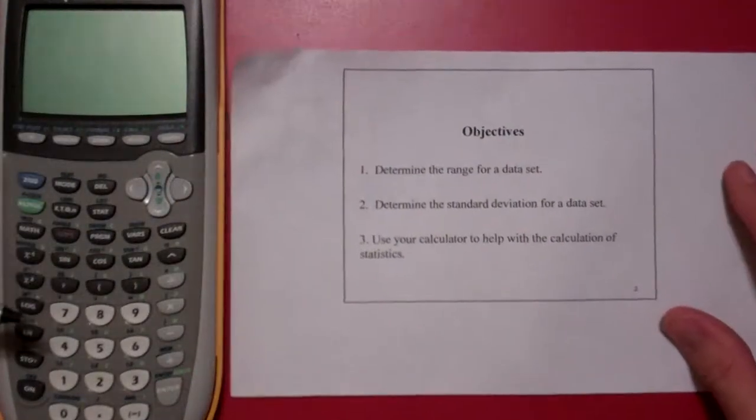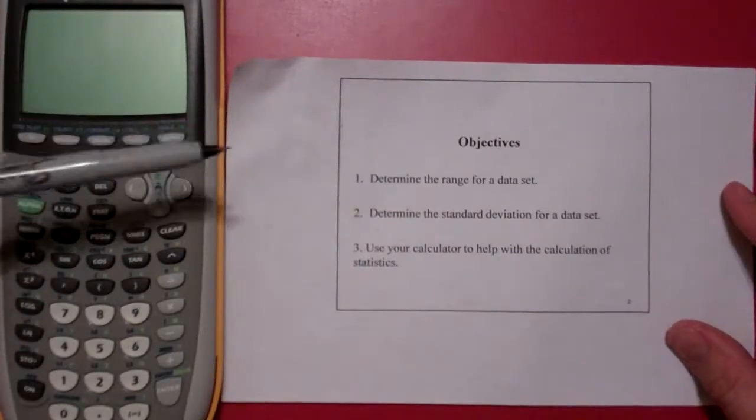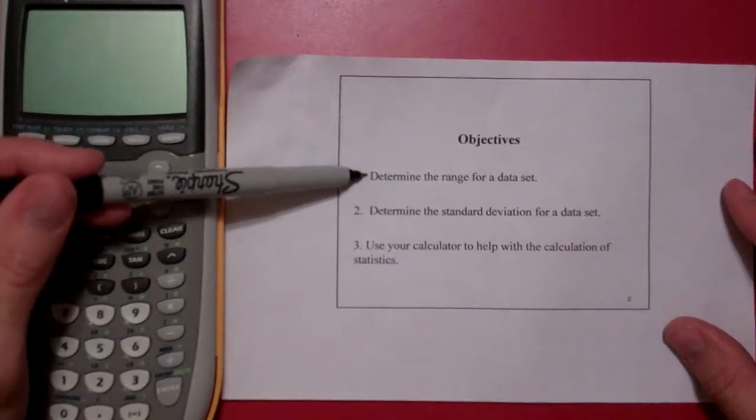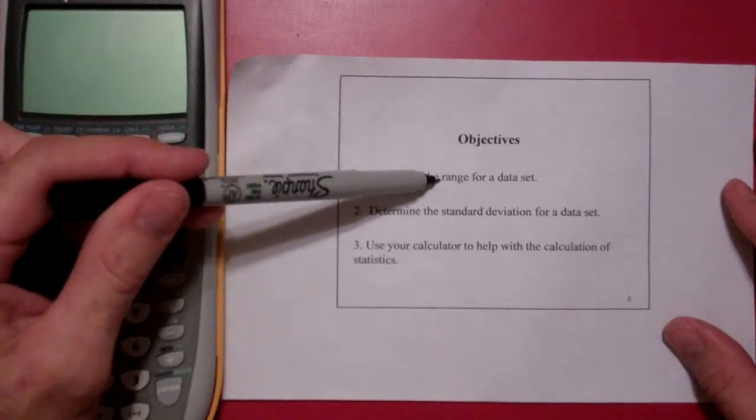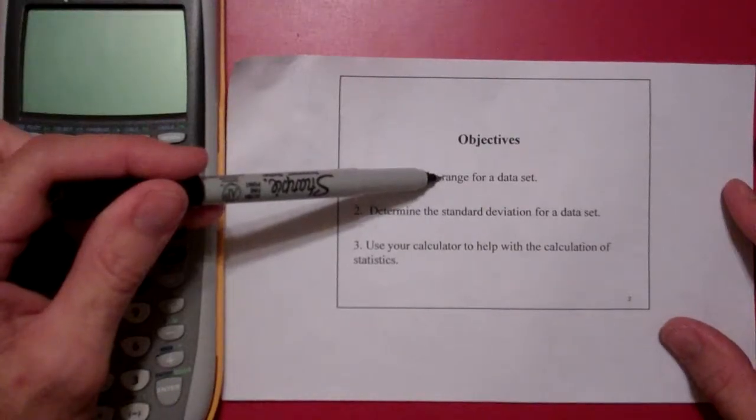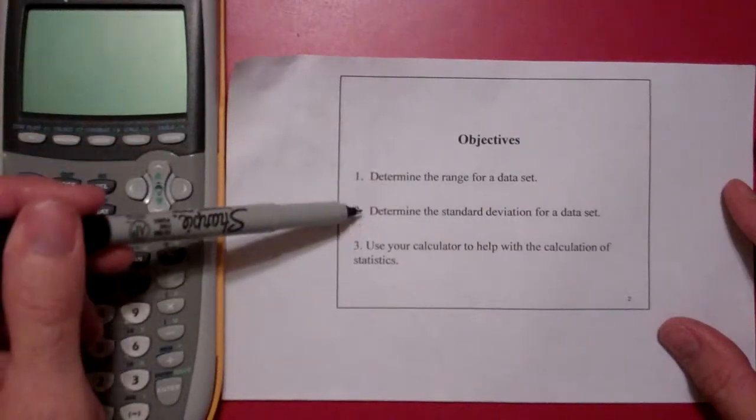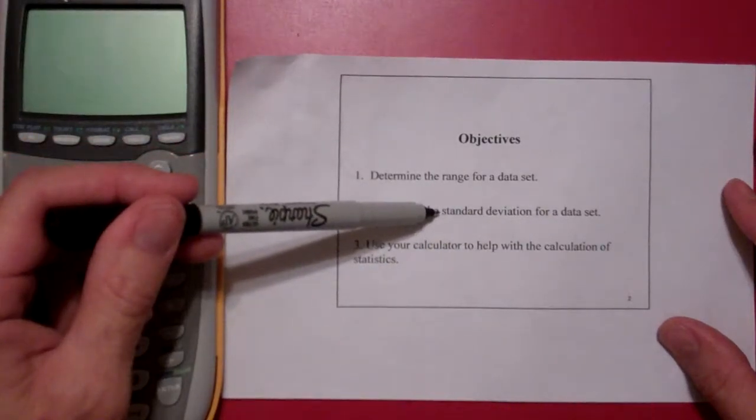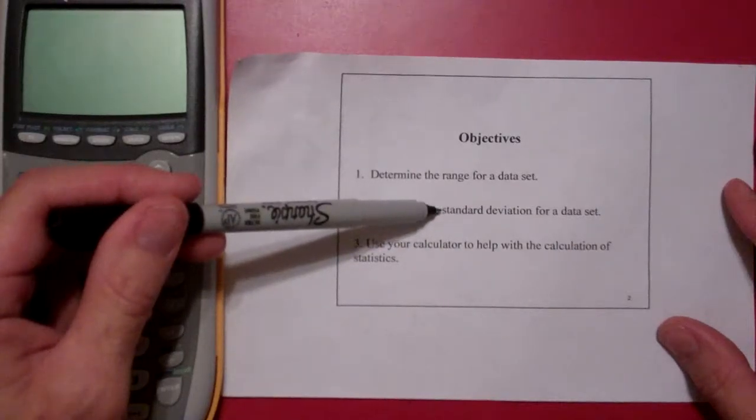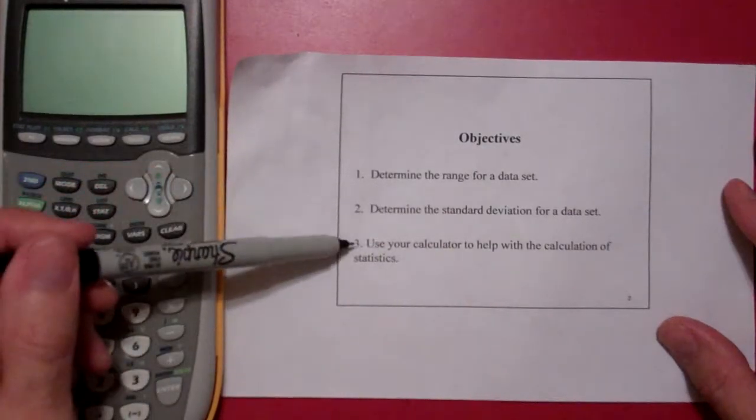We do have a couple of objectives. One of them is to be able to use the calculator. First thing we want to do is determine the range for a data set. The range is a measure of variability or spread from the lowest to the highest value. Determine the standard deviation for a data set. Standard deviation is something special to statistics and it is sort of sensitive to outliers, but we're not going to discuss the interquartile range. We save that for stat methods.